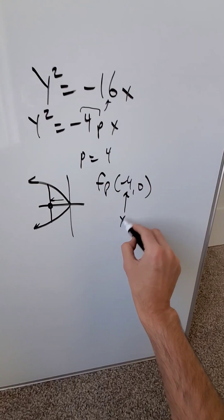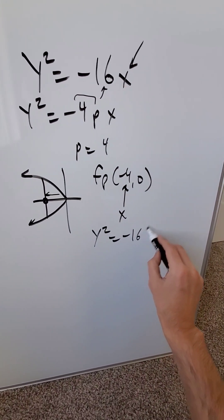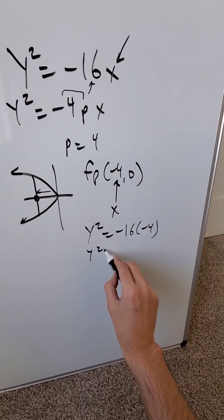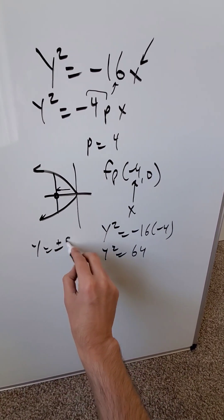This value right here is an x value which you'll put right here. You have y squared is equal to minus 16 times minus 4. y squared is equal to 64 therefore y is equal to plus and minus 8.